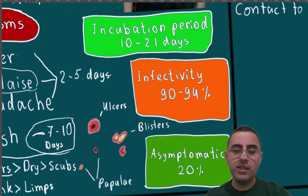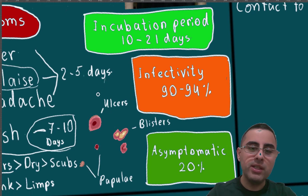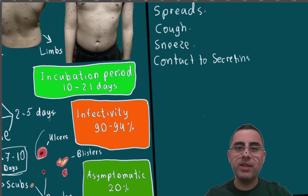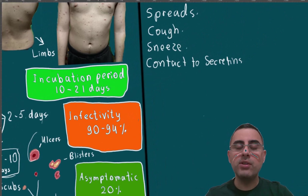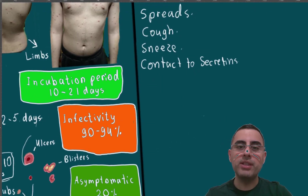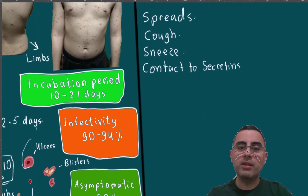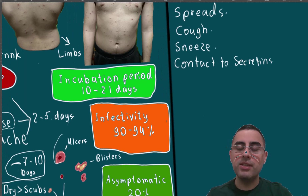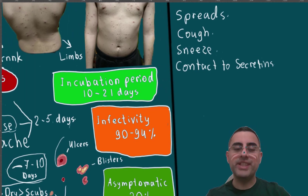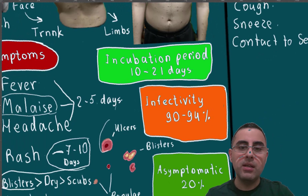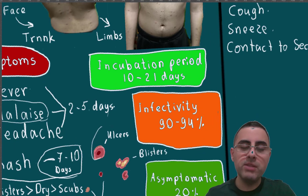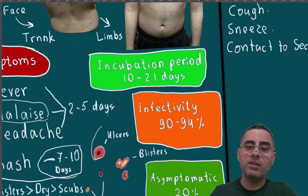The rash can also appear as ulcers, blisters, or pustules. The disease spreads through contact with the respiratory system — droplets from coughing or sneezing — and also through contact with secretions from blisters. The incubation period of this disease is 10 to 21 days.